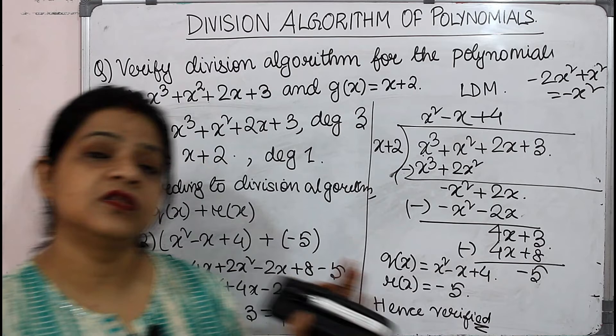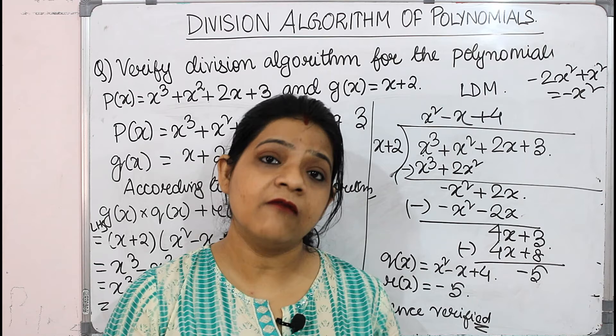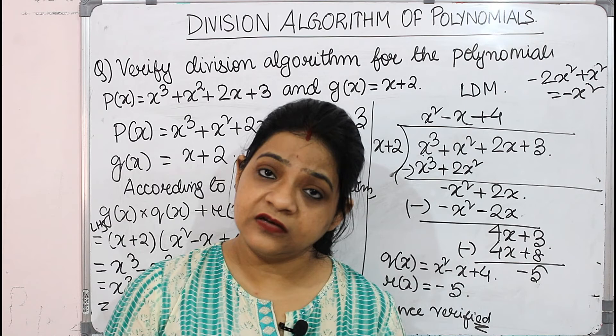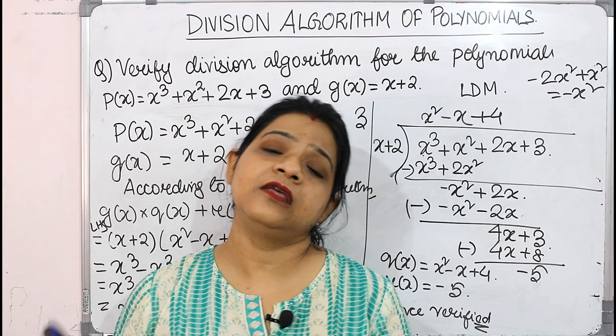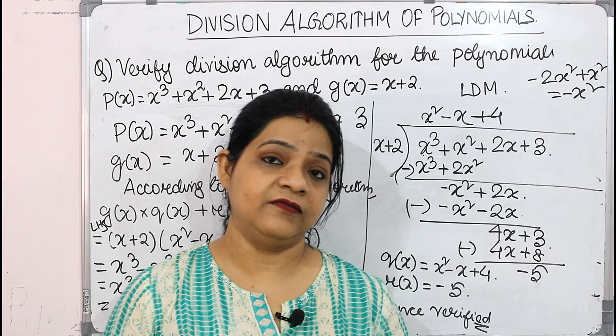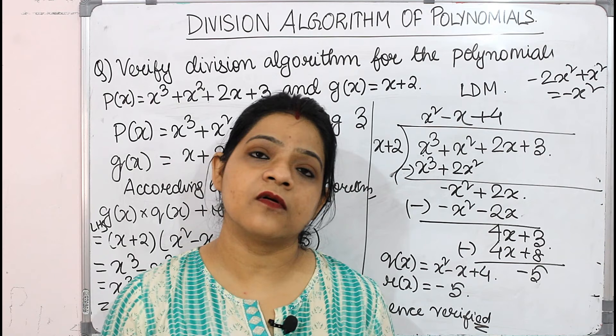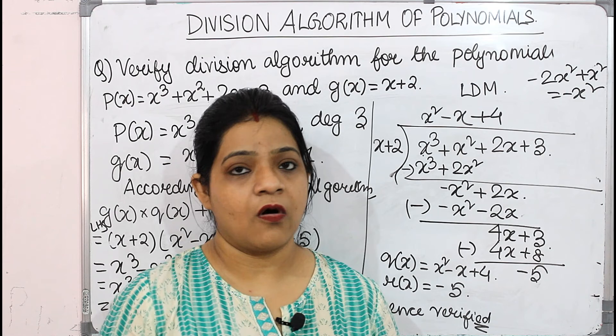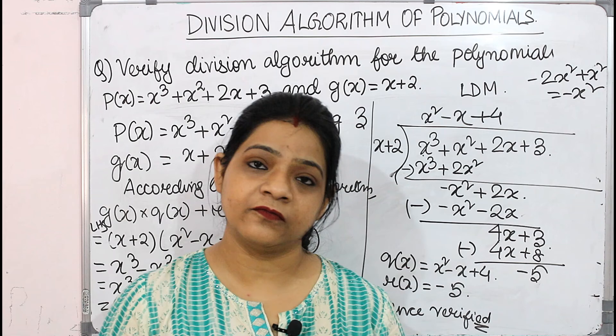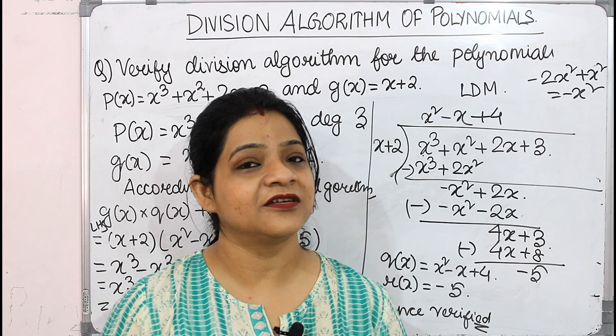This is how we solve problems on the division algorithm. You need the quotient and remainder from long division, then substitute into the formula to get P(x), the dividend. Perform the division carefully, use the values in the formula, and it's straightforward. I hope this video is useful — please subscribe to LearnGuru classes, like, comment, and share. Thank you, bye bye.